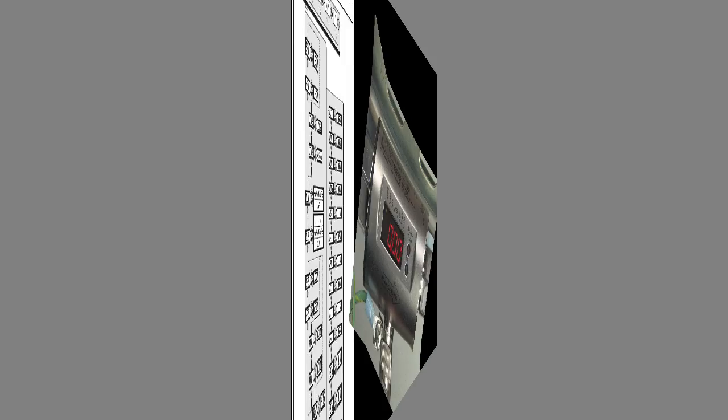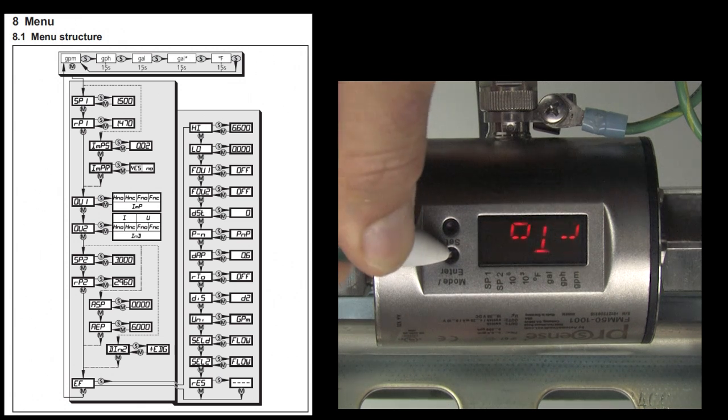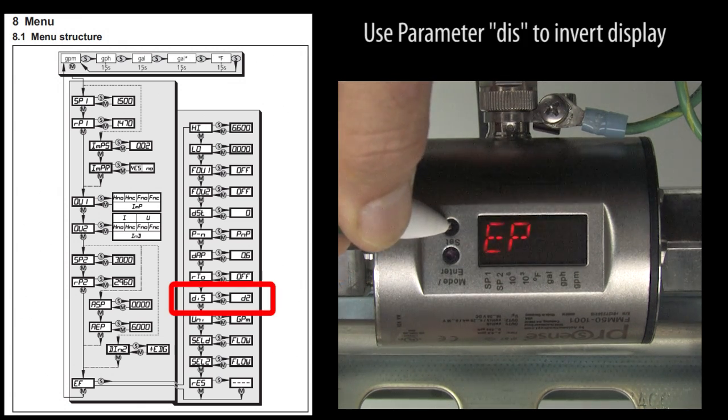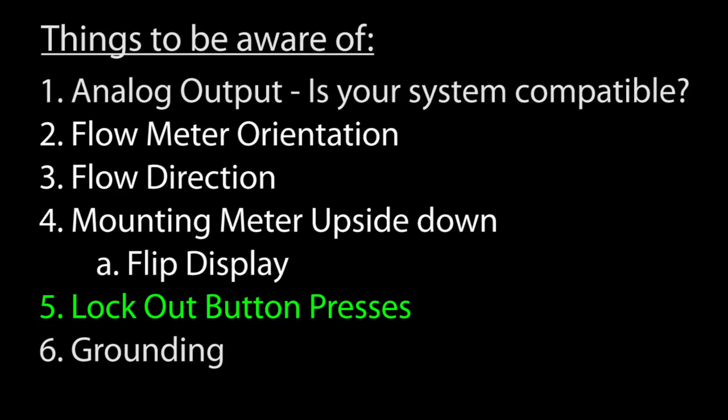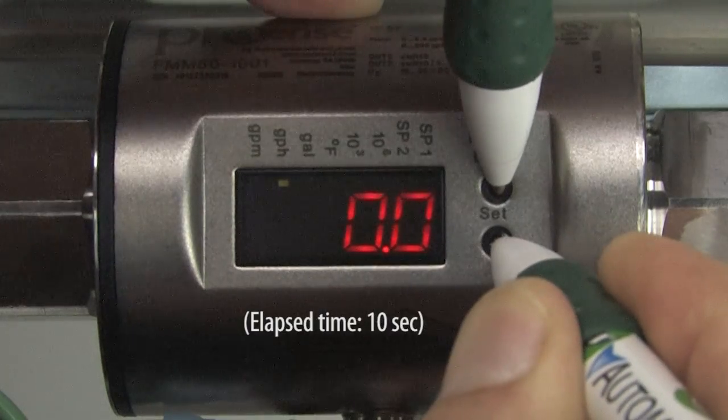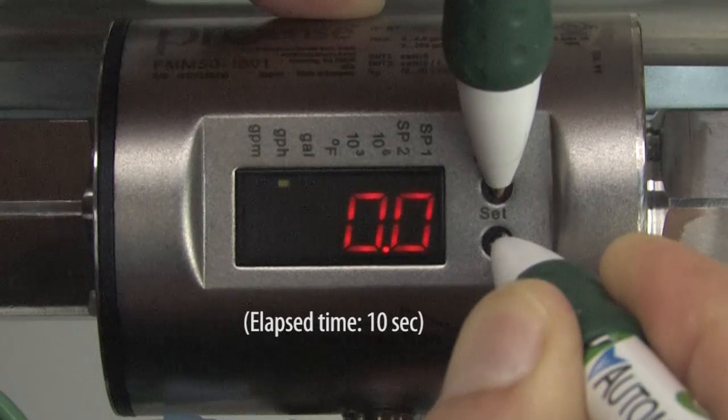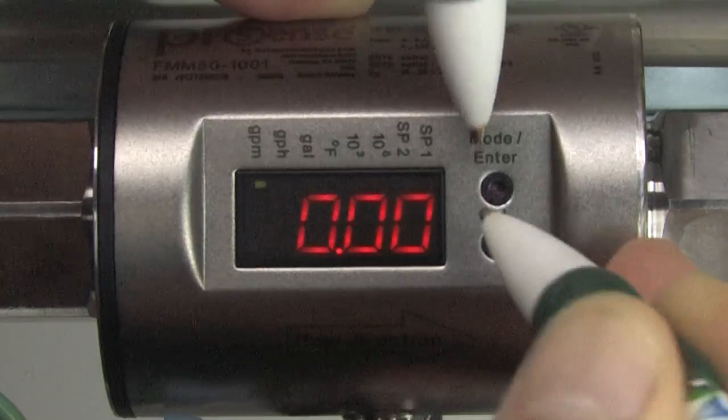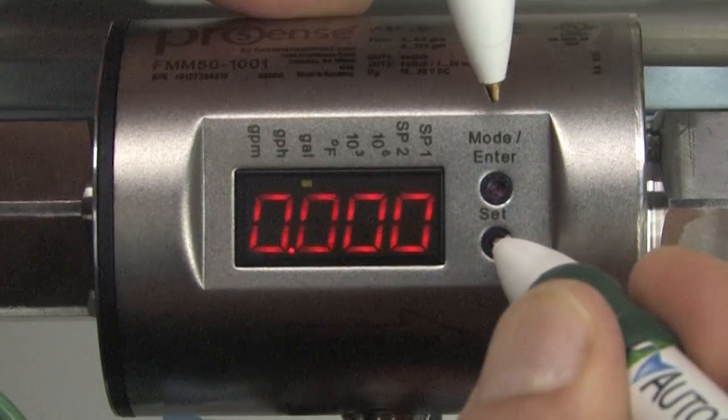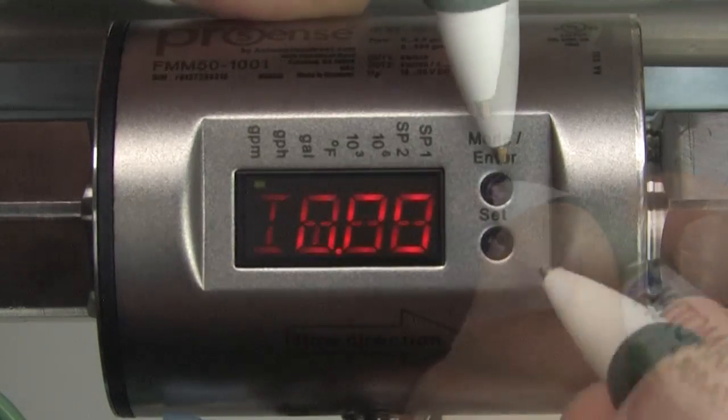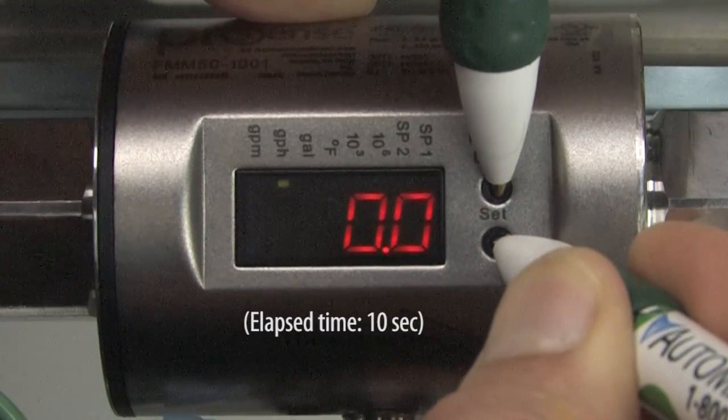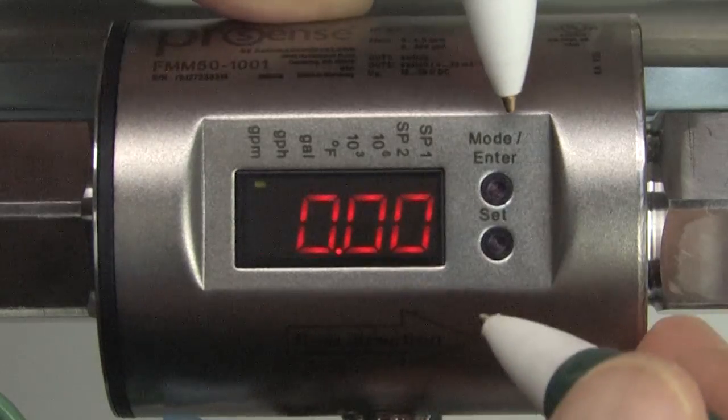You can mount the unit upside down as long as the flow is in the right direction and there's even a parameter you can set to invert the display. You can lock out button presses by holding down the mode and select buttons for 10 seconds. You will still be able to scroll through the menus using the two buttons, but you won't be able to change any of the values. To get control of the buttons back, just hold both the mode and select down for another 10 seconds.